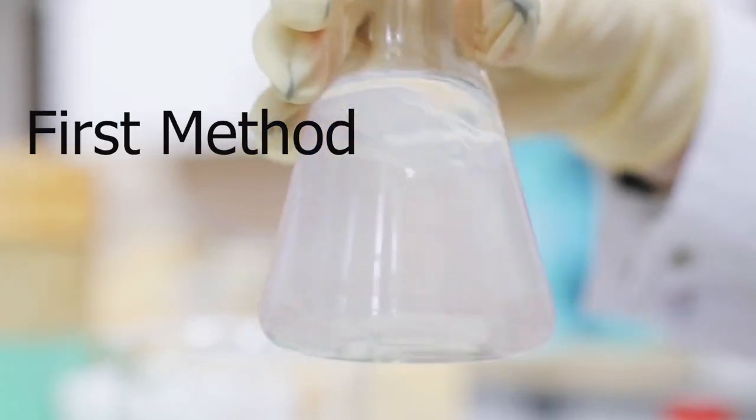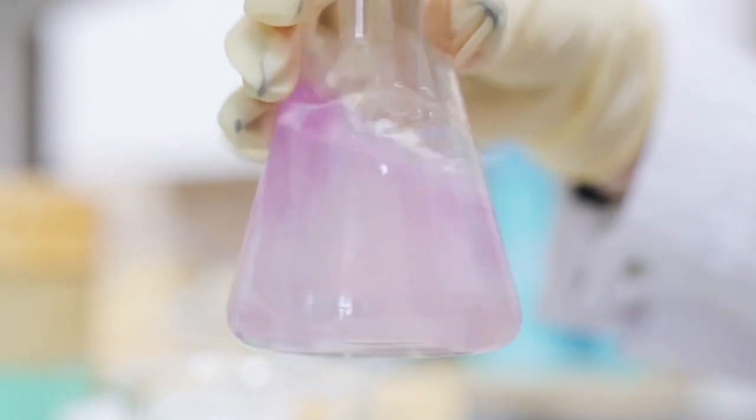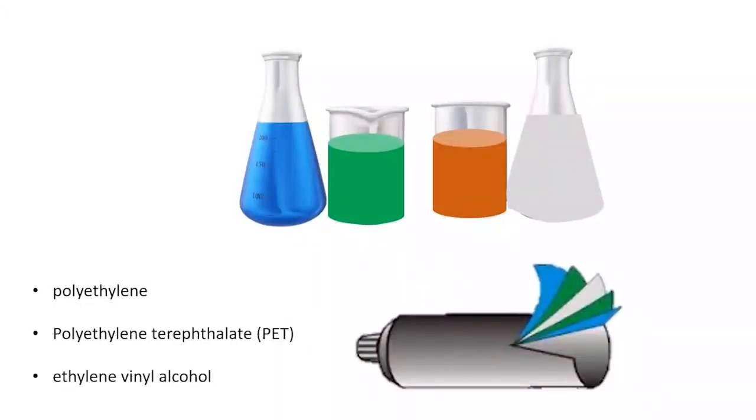Number one: solvent wash method. This process uses a series of different liquid solvents to dissolve individual plastic components of a product, using the solubility of different kinds of plastic in different solvents.